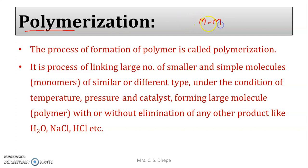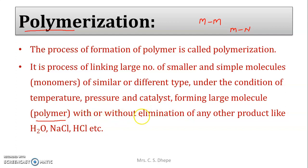In a scientific way, polymers are formed by joining monomers - either similar or different types of monomers. It is the process of linking a large number of smaller and simple molecules of similar or different types under the conditions of temperature, pressure, and catalyst, forming a large molecule called a polymer, with or without elimination of any other product like water, NaCl, or HCl.